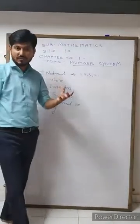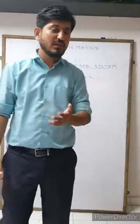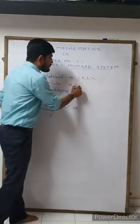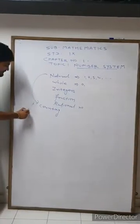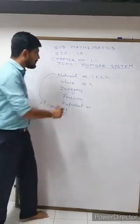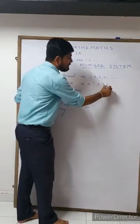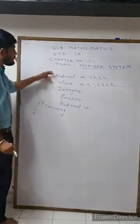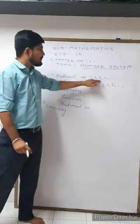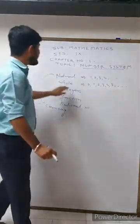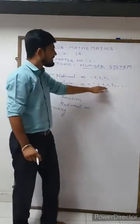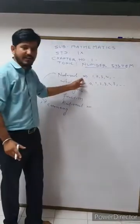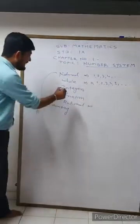Natural numbers are also known as counting numbers, because we use them to count things — if we count the number of students we start with one, two, three. Now, if we add zero to the natural numbers, the numbers start from zero: zero, one, two, three, four, five and so on. These numbers are known as whole numbers. The difference between natural numbers and whole numbers is that natural numbers always start with one, while whole numbers start with zero.